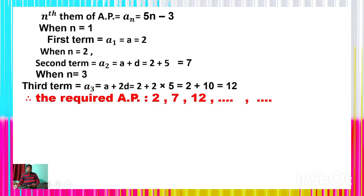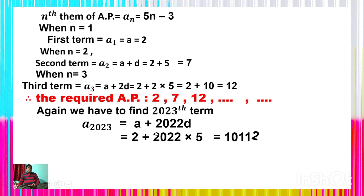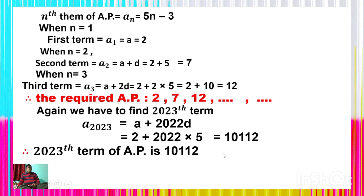Now finding the 2023rd term of the AP: a_2023 = a + 2022d = 2 + 2022×5 = 2 + 10,110 = 10,112. Thus the 2023rd term of the required AP is 10,112. This is one of the most interesting and probable questions for you.